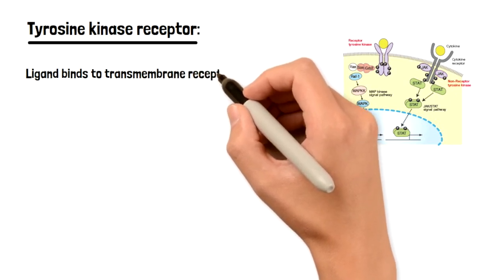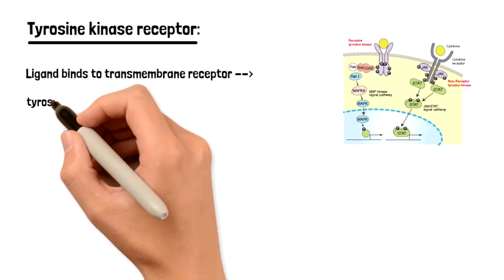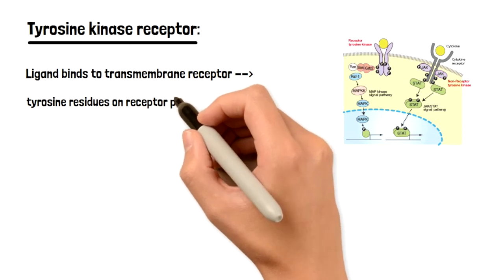So it's going to bind, and this binding is going to cause phosphorylation of that receptor, specifically phosphorylation on the tyrosine residue which is on the receptor.